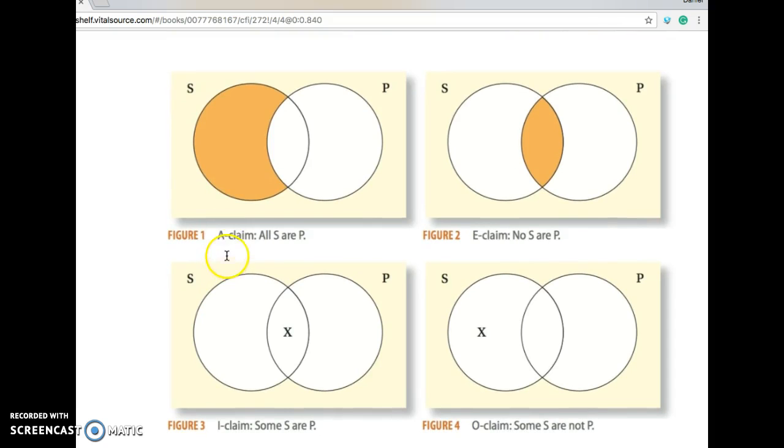You'll see the introduction to Venn diagrams. This is the appropriate shading when we have an A claim, all S are P, we shade this all out to say empty. To say no S are P, we shade the middle.